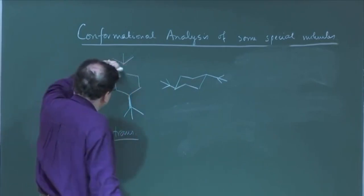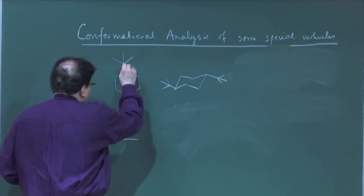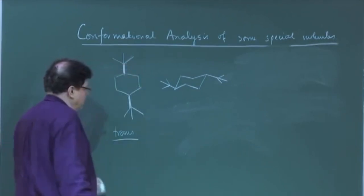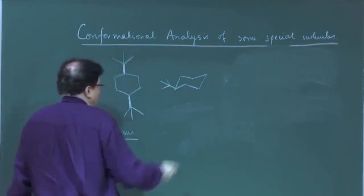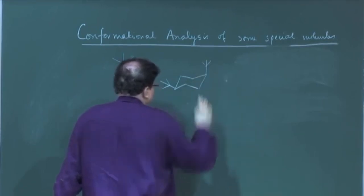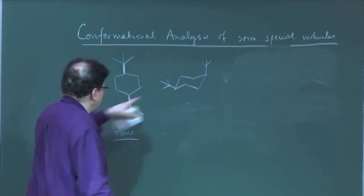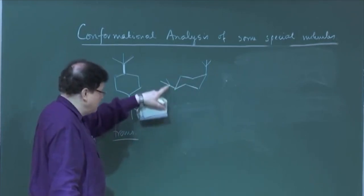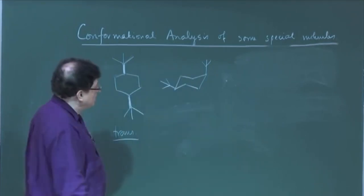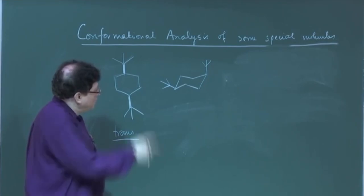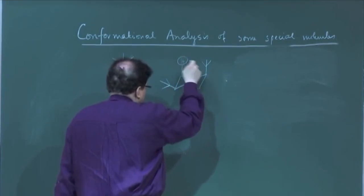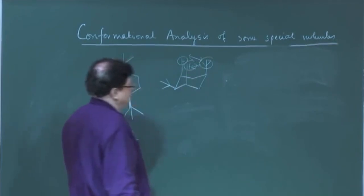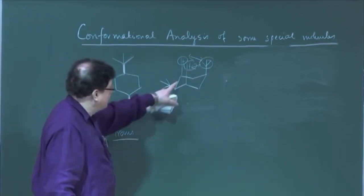But if I change this to the cis form, the problem is I have no other choice but to put one of the tert-butyl groups in the axial position, because both are beta — meaning one is equatorial and another is axial. I said that you cannot put a tert-butyl in the axial position because of enormous 1,3-diaxial interactions, so this will not stay in the chair form.